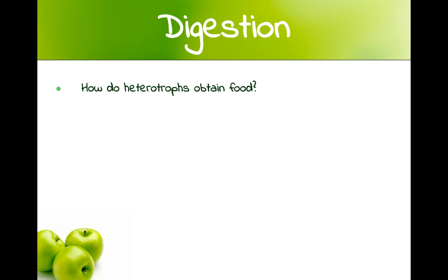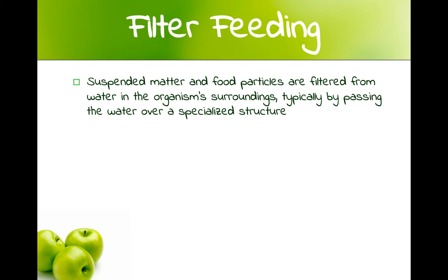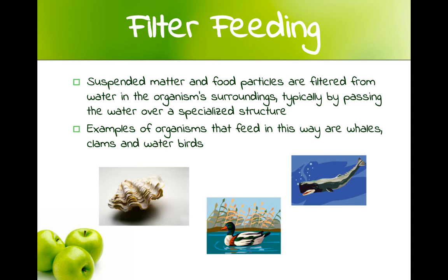We're going to focus on heterotrophs. How do they obtain food? There are four main ways: filter feeding, substrate feeding, fluid feeding, and bulk feeding. Filter feeding is when suspended matter and food particles are filtered from the water in the organism's surroundings, typically by passing the water over a specialized structure. Basically, the water goes through a filter within the organism and suspended food is captured. Examples of organisms that feed this way are whales, clams, and water birds.